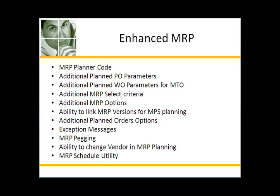Functions within the module provide the ability to sort requirements by an MRP planner code in addition to buyer, the ability to plan purchase order quantities in min, max, and multiples, the ability to plan work orders in a make-to-order environment where the planned work order is linked to a sales order line, and the ability to further define the plan using additional select criteria such as ignore staging bins, and the ability to automatically save the MRP version after generating orders.